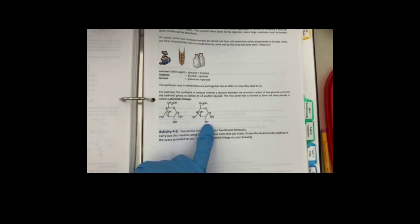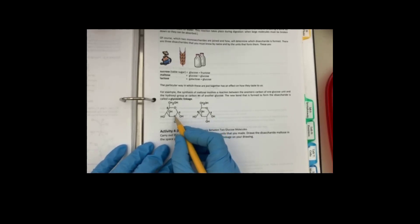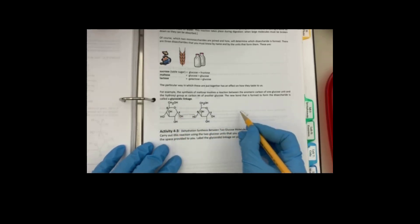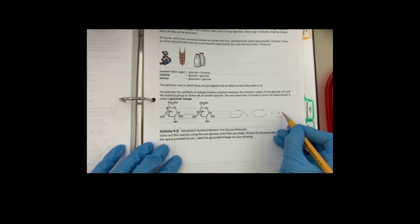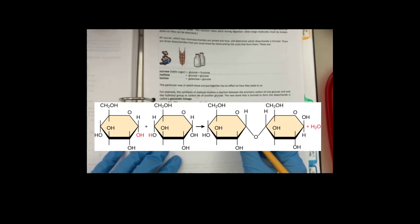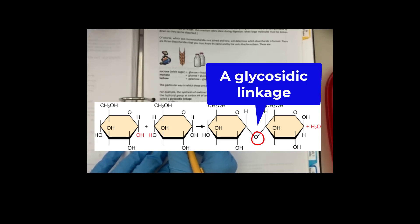So you have two monosaccharides here. In order to make the bond between this molecule and this molecule, you need to remove one water molecule. Let me do it real quick. Plus one water molecule. What is the name of the linkage? Glycosidic linkage.